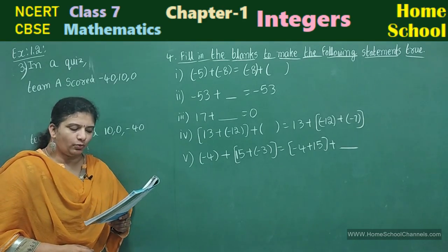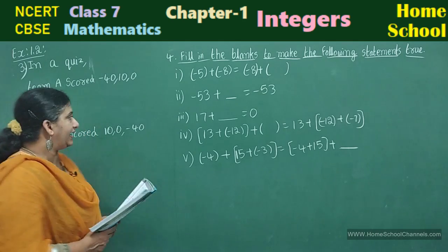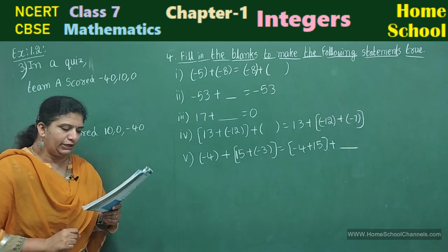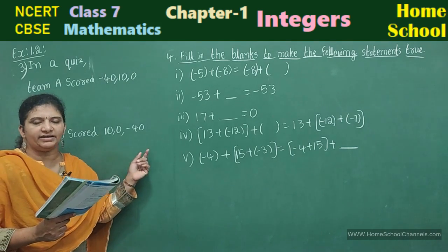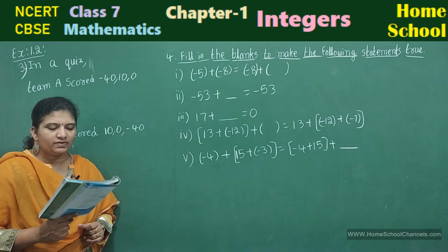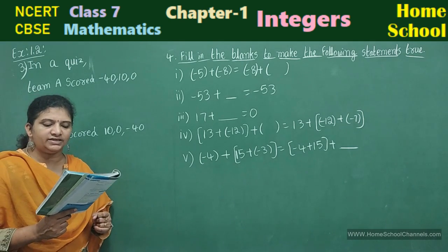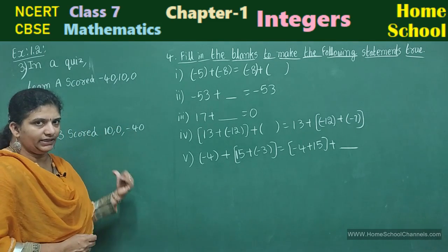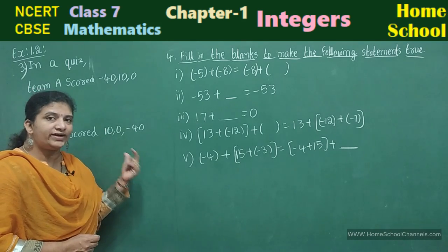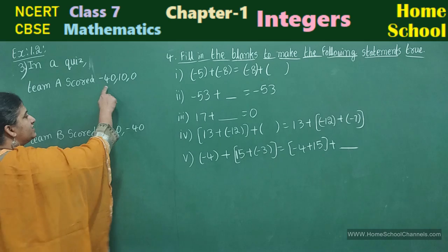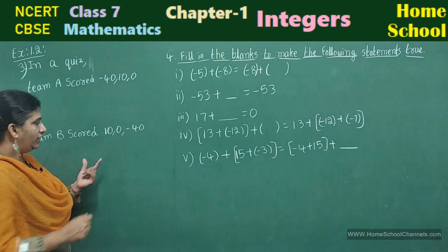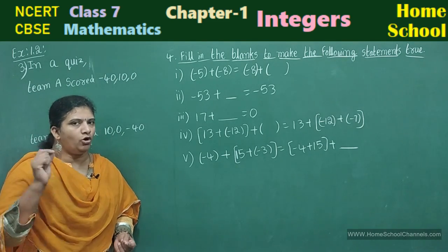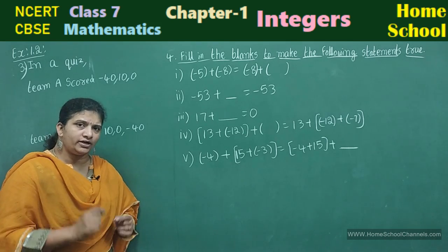Third question: a quiz is conducted between two teams. Team A scored minus 40, 10, 0 and team B scored 10, 0, minus 40 in three successive rounds. Which team scored more? Can we say that we can add integers in any order? To find which team scored more, we need to sum the scores. Total score of team A equals minus 40 plus 10 plus 0.